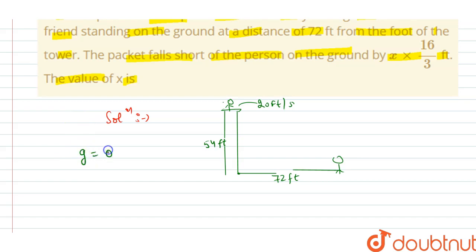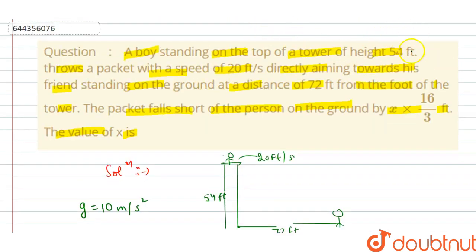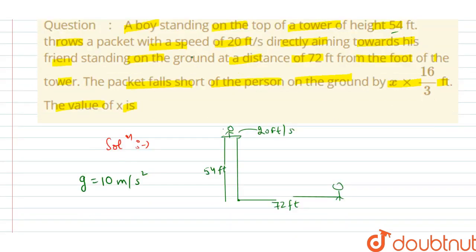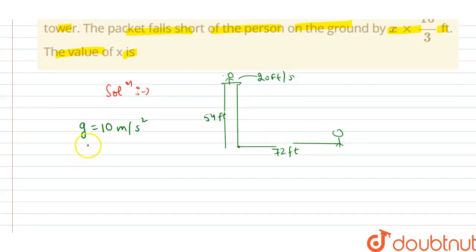We know that g is equal to 10 meters per second squared, but in this question all the quantities were given in feet, so we have to change this g, that is 10 meters per second, to feet per second.